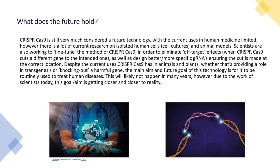So, those were some current uses of CRISPR-Cas9 — but what does its future look like? CRISPR-Cas9 is still very much considered future technology, with current uses in human medicine limited. There is a lot of current research on isolated human cells and animal models. Scientists are also working to fine-tune CRISPR-Cas9 to eliminate off-target effects — when it cuts a different gene to the intended one — and to design better, more specific guide RNAs, ensuring the cut is made at the correct location.